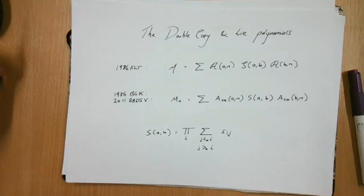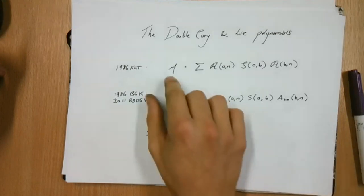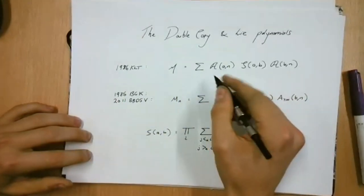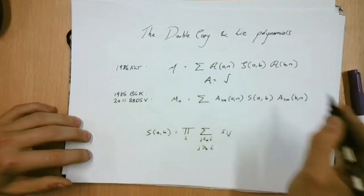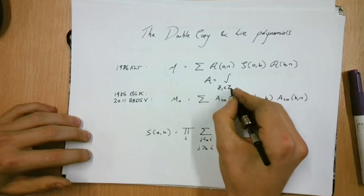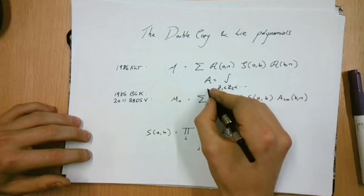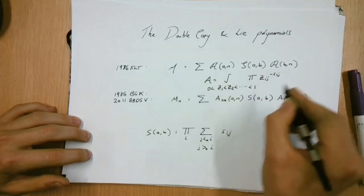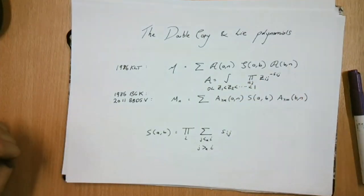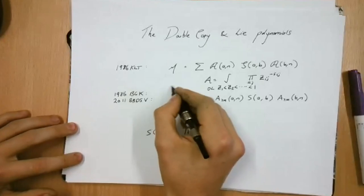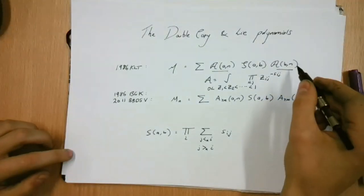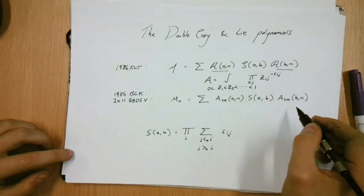The subject of the talk goes back to the KLT relation in the 1980s, which related closed string integrals to sums of disk integrals. This calligraphic A here is a Veneziano amplitude, normally written as a disk integral of a multi-valued function z_ij to the minus s_ij. A relation of this kind between a closed string amplitude and two disk integrals, implied by taking the so-called field theory limit of string theory.